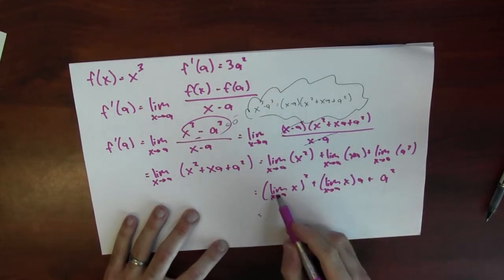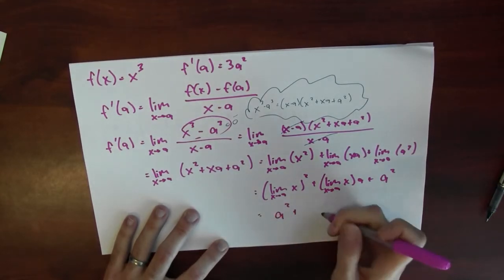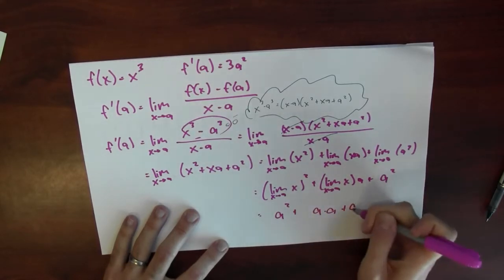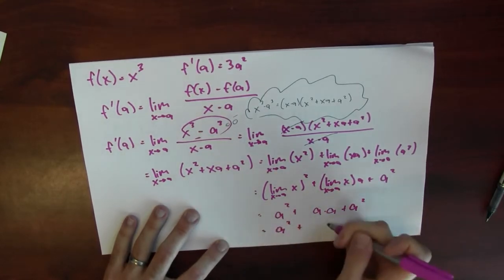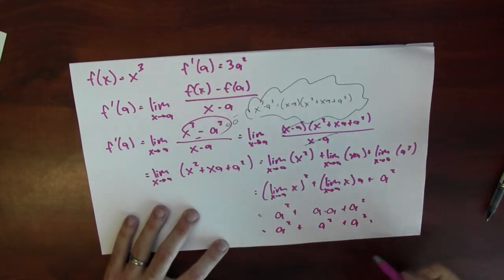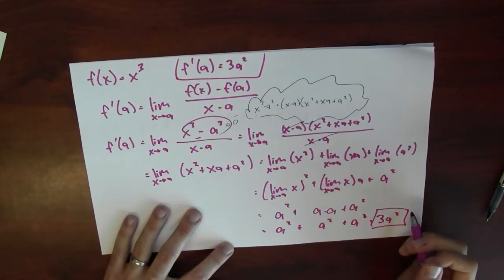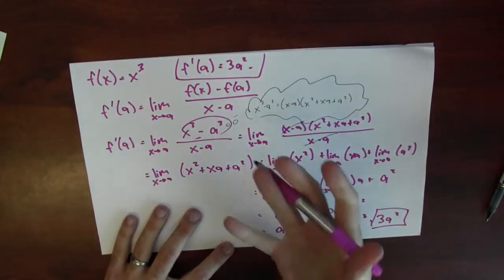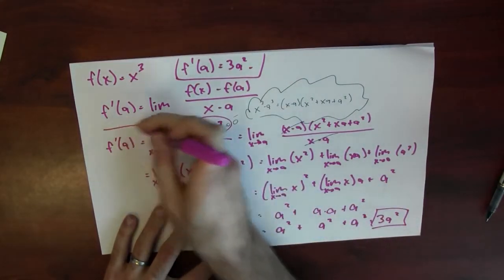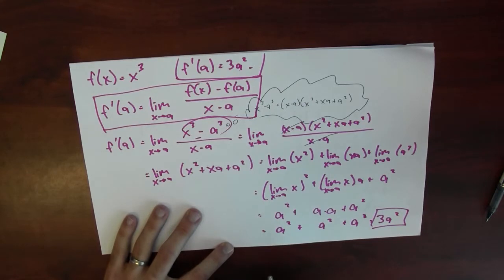Now, what's the limit of x as x goes to a? That's just a. So the first term is a squared, the second term is a times a, and the third is still a squared. So now I've got a squared plus a squared plus a squared, which is 3a squared. And that's exactly what I claimed up here is the derivative of the function at a. This is a completely rigorous argument for the fact you might have known from the power rule — this is how you actually prove it. We use the definition of derivative, calculate the limit, and find that the derivative of x cubed at the point a is 3a squared.